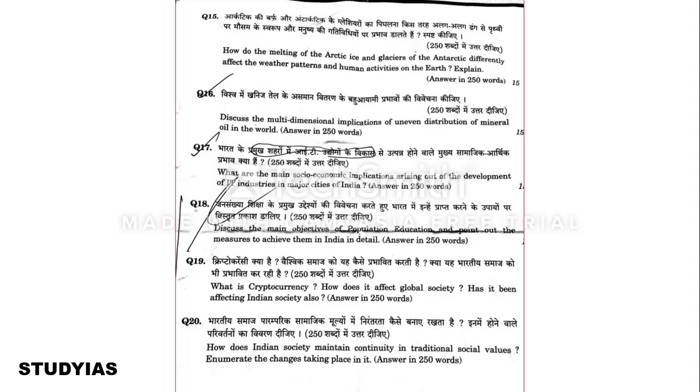Question nineteen: What is cryptocurrency? How does it affect global society? Has it been affecting Indian society also? Cryptocurrency was such a topic that it was clearly expected — it has been widely discussed after the pandemic, with market booms, and debates around the Indian government's stance on giving it legal status. There were many editorials on it, so it was quite predictable that UPSC could ask about it.